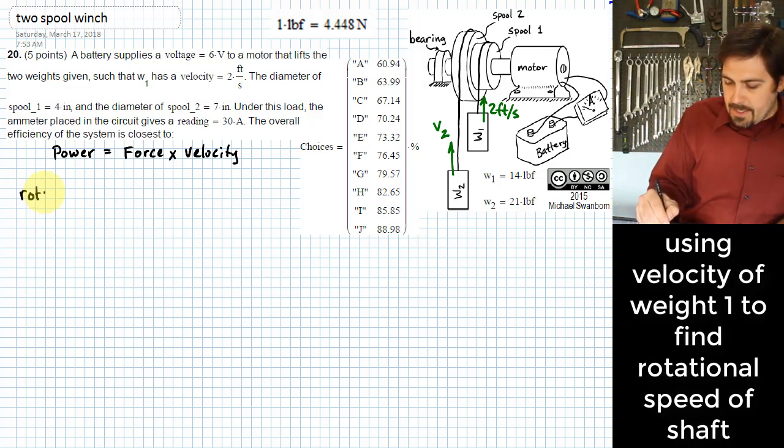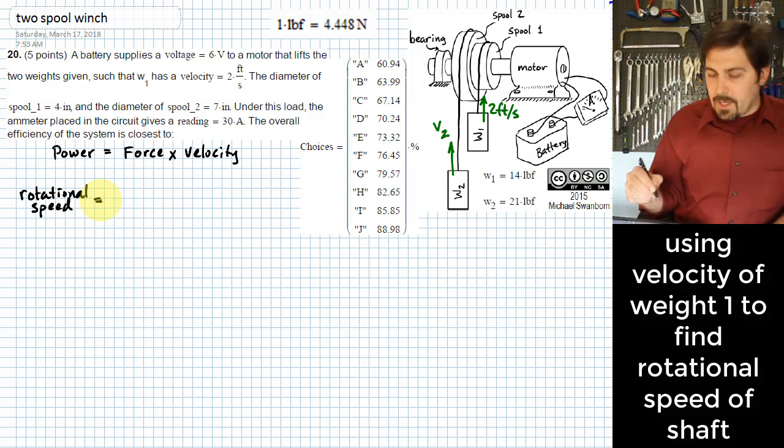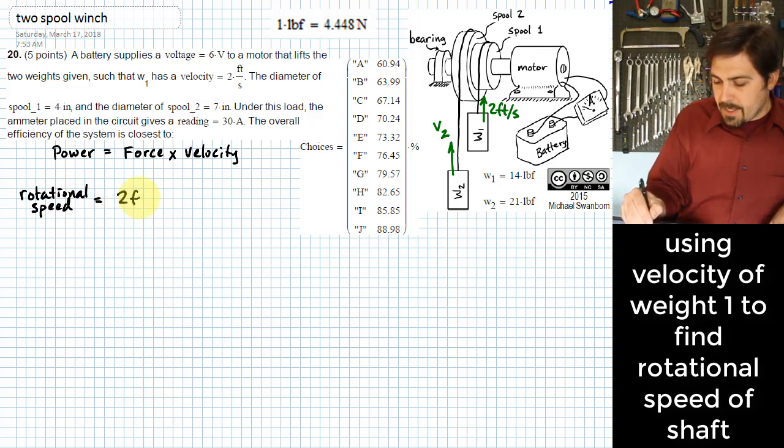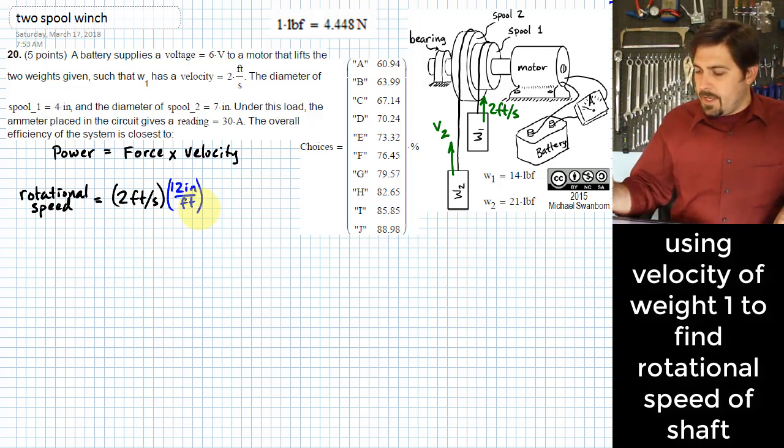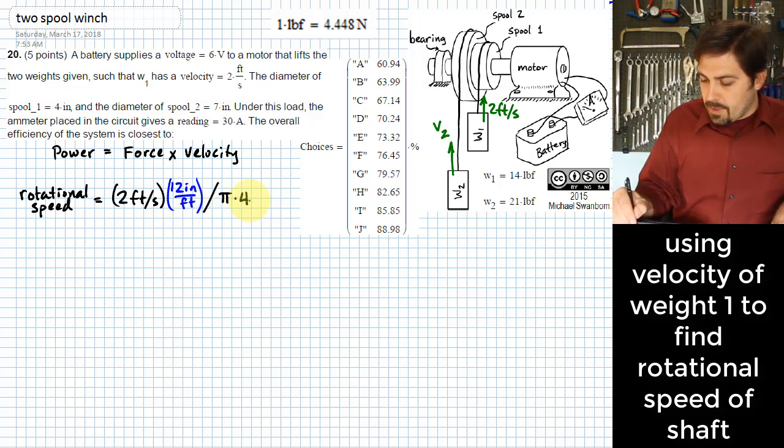So toward that end, I'm going to first figure out the rotational speed of the shaft. To get rotational speed, I need to take the linear speed of two feet per second. I don't actually really like this unit of feet for this particular problem, so I'm going to multiply by 12 inches per foot. If I take this and divide it by the circumference of that first spool, that is how many revolutions it takes. The circumference is how far it will go in one revolution. So I have pi times 4 inches.